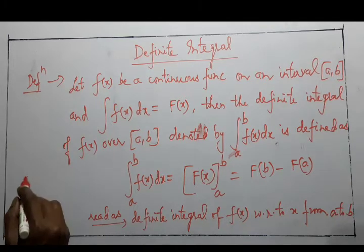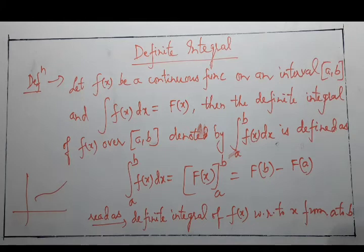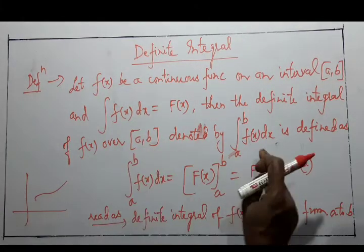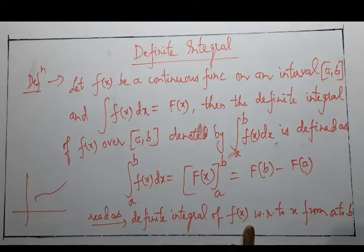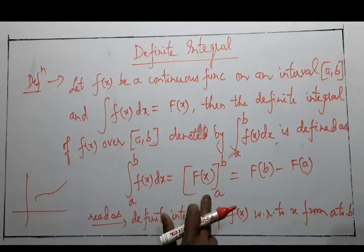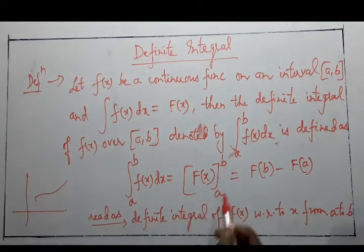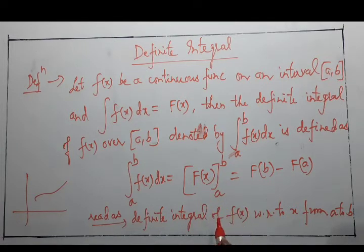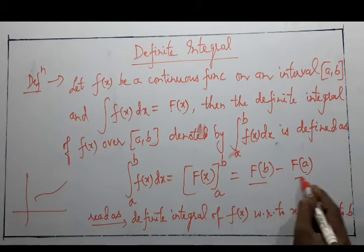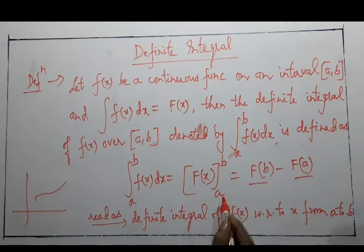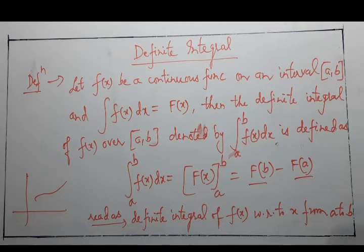The function must be continuous on the interval [a, b]. The definite integral of f(x) over [a, b] is denoted ∫(a to b) f(x) dx. Since the function is continuous on the closed interval, we can substitute values directly. 'a' is called the lower limit and 'b' is called the upper limit of the integral.